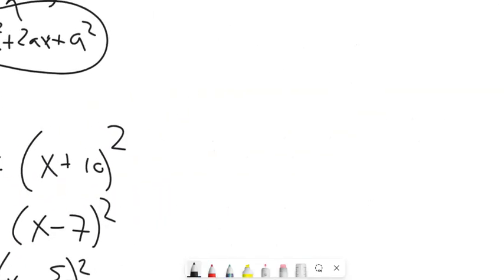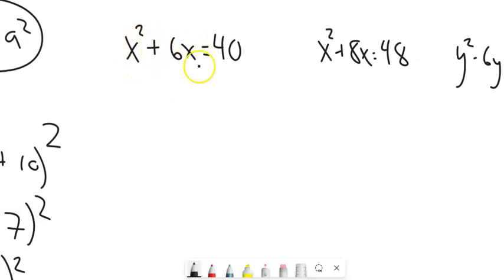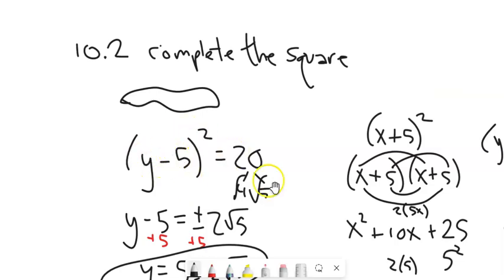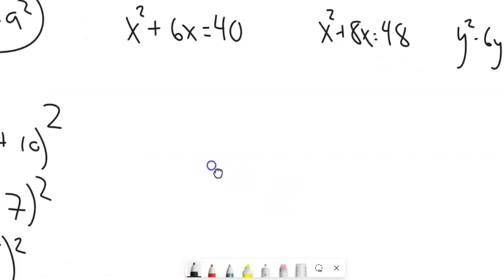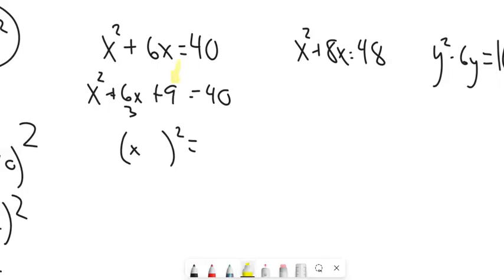So how does this help us solve problems? On the left-hand side I have x² + 6x = 40. I want to find the x values that make it true. My strategy is to get it written as something squared equals a number. I'm going to complete the square: half of 6 is 3, 3² is 9, so I add 9 to both sides to keep it balanced.